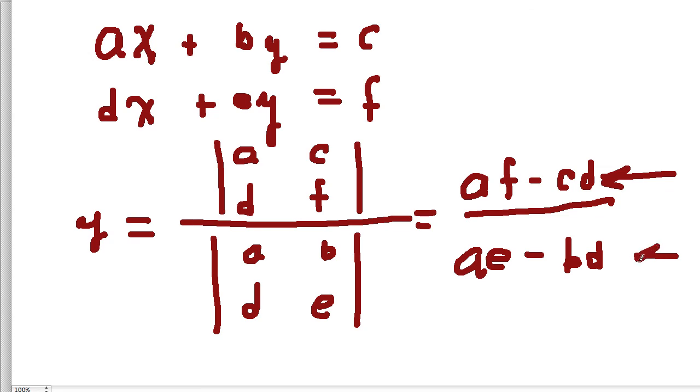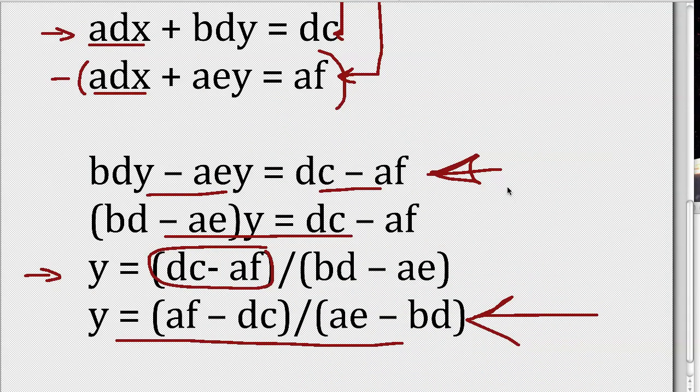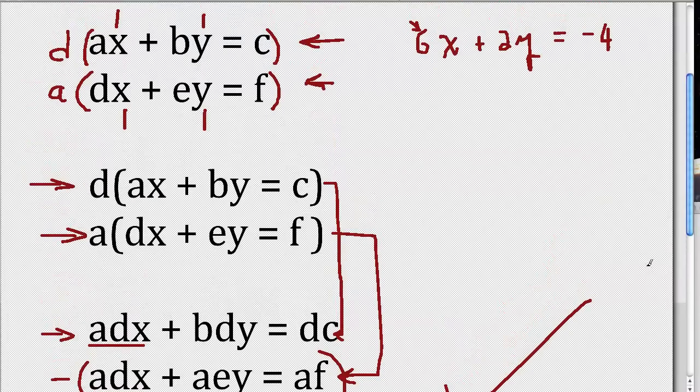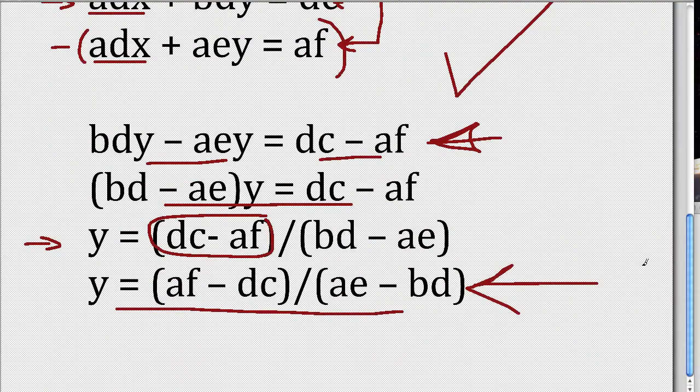So you can consider then, this derivation I have just shown you, this whole expression, this whole derivation, is a proof of Kramer's Rule for a set of two equations and two unknowns. So, until next time.